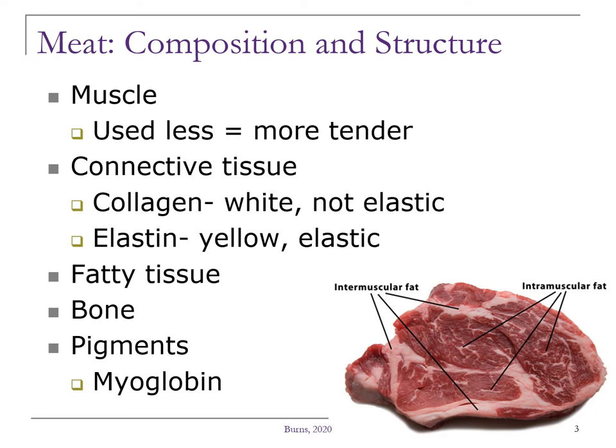The third structural component is the fatty tissue. The intramuscular fat is also called marbling, and you can see that as the flecks of fat found throughout the lean muscle tissue. Most often, the more marbling a meat cut has, the more tender it will be. The intermuscular fat is the fat found between the muscles.